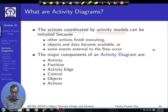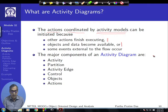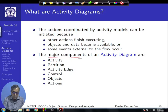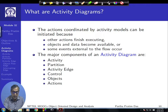A model may be initiated because certain objects and data become available — for example, you provide user ID and password for login, and once that is available the action for verification starts. Or it may be because of some external event, such as receiving a message token or a system condition. The activity diagram shows all these actions and how they are interrelated. These components will be taken up one by one to show how they are represented and how they help achieve the activity description.